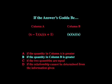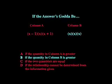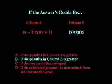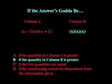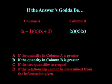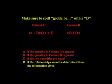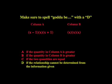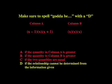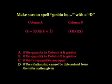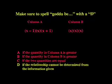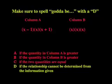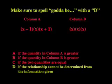Rather than running through all of these possibilities on the GRE and hoping we find the exception, if we do an algebra problem and quickly say the answer's gotta be — we realize there must be some exception we don't have time to find. So we make sure when we say 'gotta be' that we spell it with a D: the relationship cannot be determined with the information given.